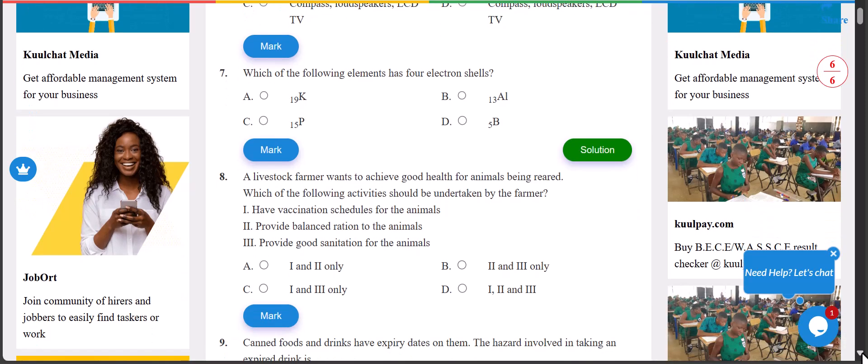Number seven: which of the following elements has four electron shells? The answer is A, 19K. That is the correct answer.